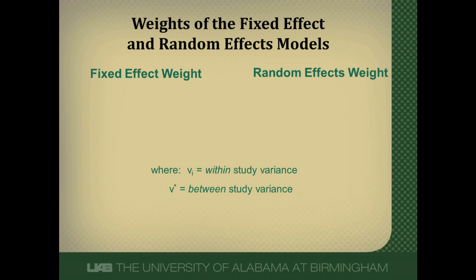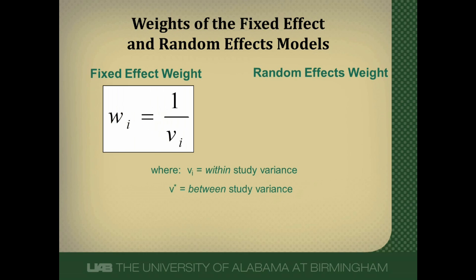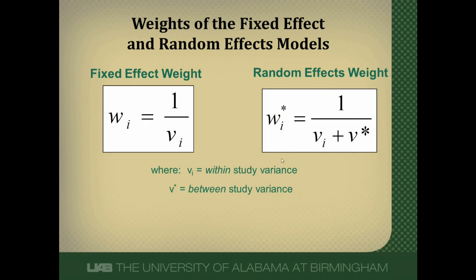When we calculate the summary statistic by combining all the individual studies, it tends to be a weighted average where the weight is one over the variance, or the inverse of the variance. In the fixed effects model, the only variance considered is within-study variance, or the role of chance. A random effects model also considers within-study variance, but additionally considers between-study variance, or heterogeneity. So the weights are a little bit different in the random effects versus the fixed effects models.